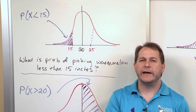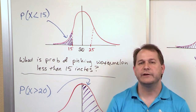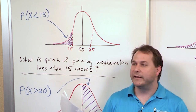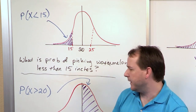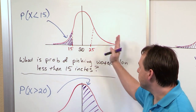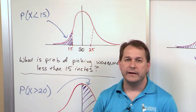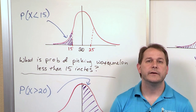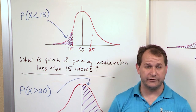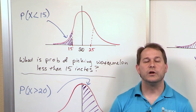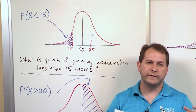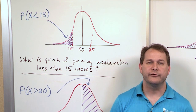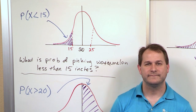We're inching our way along. We've introduced the normal distribution, introduced some properties, talked about areas, and gotten comfortable with thinking in terms of greater than or less than. In the next sections, we'll learn to use the tables to actually get real answers to problems.